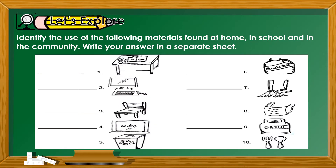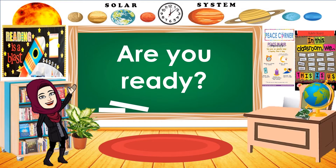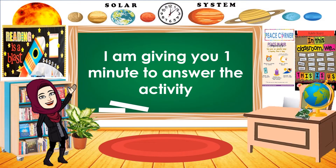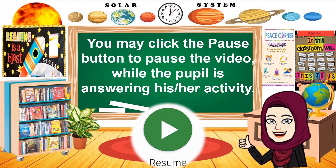Now, let's proceed to let's explore. I will go over the direction, so listen carefully. Identify the following materials found at home, in school, and in the community. Write your answer in a separate sheet. Number 1: What can you see from this picture? Very good! It means it's a table. It can be found at home or in school. Now, it's time for you to answer the following pictures from number 2 to number 10. You can do it! Are you ready? I'm giving you 1 minute to answer the activity.